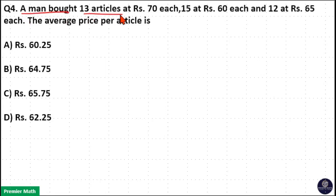A man bought 13 articles at Rs. 70 each, 15 at Rs. 60 each, and 12 at Rs. 65 each. The average price per article is...